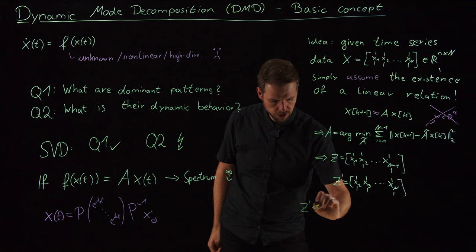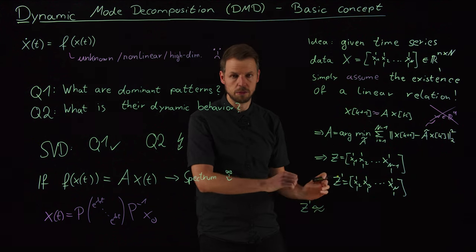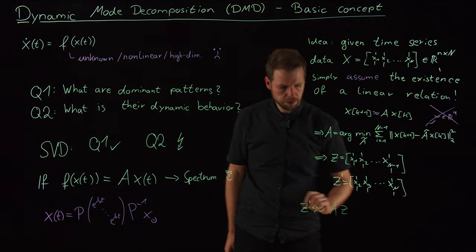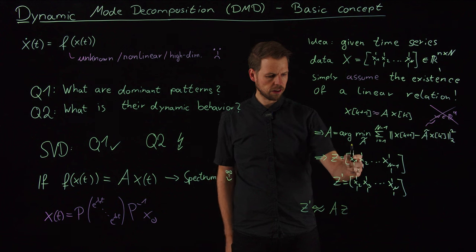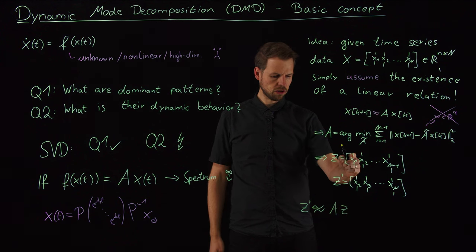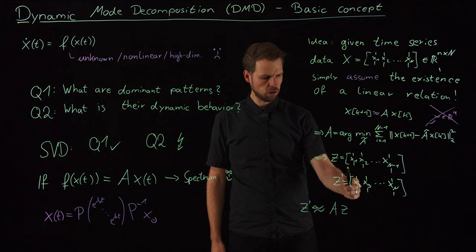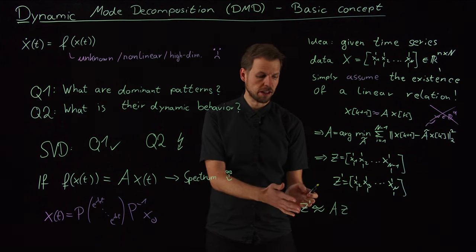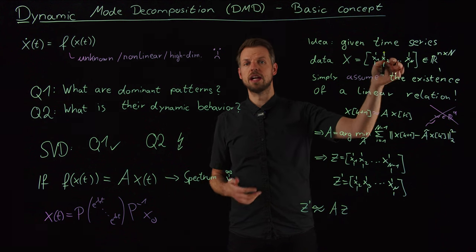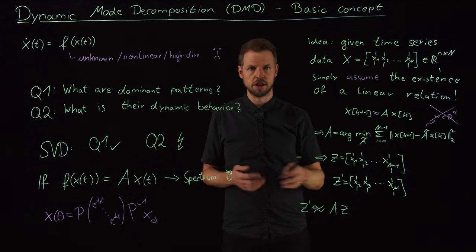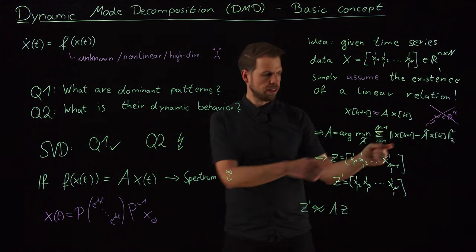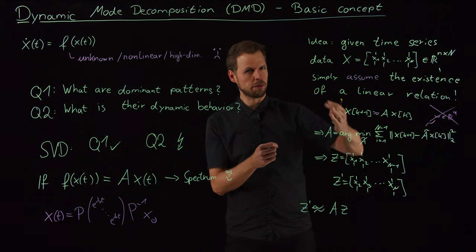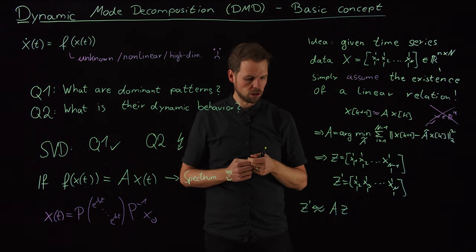So what I can say is simply the matrix Z dash is, and again let's use the approximate sign, because obviously it cannot be satisfied exactly, A times the Z matrix. So column wise, A times the first column gives me the first column of Z dash, which is x2 and so on. So it's really a mapping, and this again is an approximate sign. Only if this is really created by a linear system can we identify this. If not, then this loss function will not be zero. We cannot have an exact mapping from x_k to x_{k+1} in every time step using a linear system if the underlying relation is non-linear.